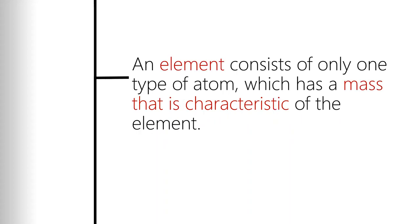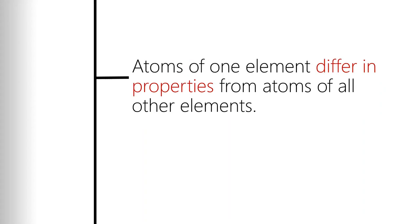His second statement is: an element consists of only one type of atom which has a mass that's characteristic of that element. That's a key point—that the element has only one type of atom. So if you have an oxygen atom, there's only one thing and it has a mass that means it's an oxygen atom. He's the first one that states specifically that elements have different masses and that's because the atoms have different masses. We're going to revisit this one a little bit later because it's got to be modified just a little bit with our current understanding.